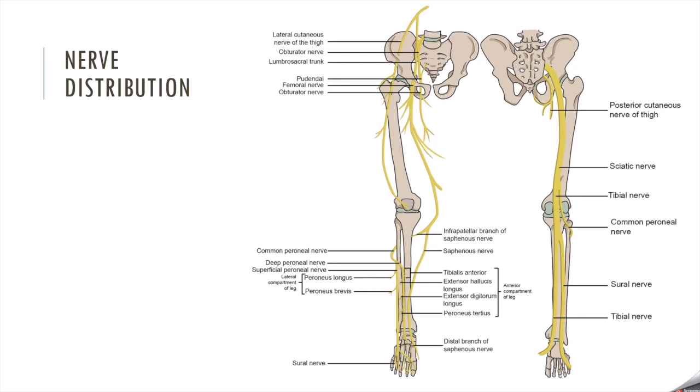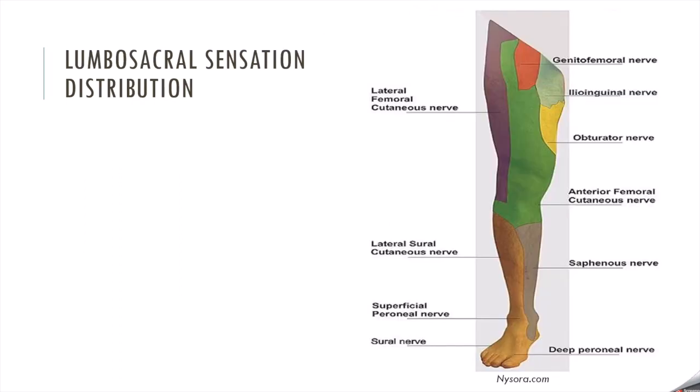Going further down outside of the pelvic region, we have the nerve pathways. Specifically, the left side is the anterior view and the right side is the posterior view of the sciatic nerve, and how it bifurcates off is the common peroneal around the popliteal region. And finally, we have our lumbosacral sensation distribution.